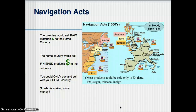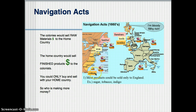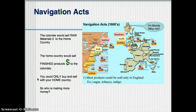The next one we're looking at is the Navigation Acts. This is where Great Britain is deliberately going to try and keep the colonies in their place. The colonies would sell raw materials to the home country — notice that the dollar amount is much smaller. When you're talking about raw materials, you're talking about things like lumber, iron, or cotton. You make some money off of that, but not nearly as much as you would from finished products. The home country would then sell the finished products back to the colonists, and you can only buy and sell with the home country — Great Britain.